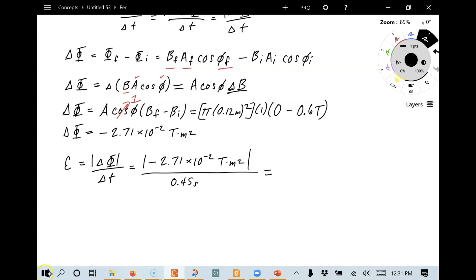Which gives us a value, 6.02 times 10 to the minus second. And remember I told you that this is just like a voltage. It's just like a battery. So it has units of volts. We take the positive value, and so we get this magnitude of the average EMF induced in the coil.